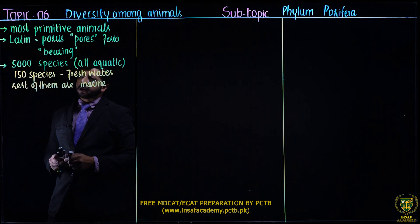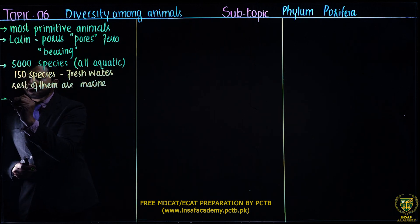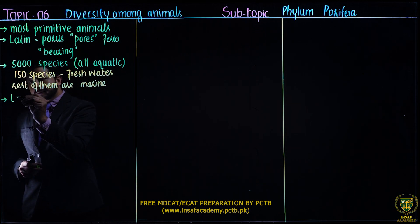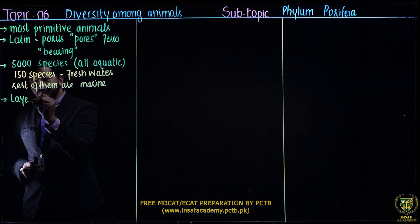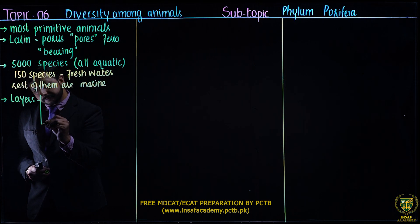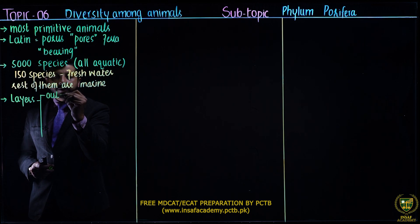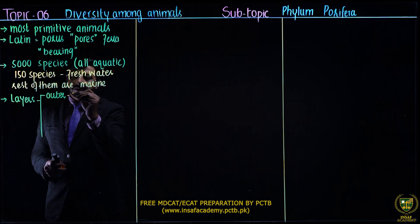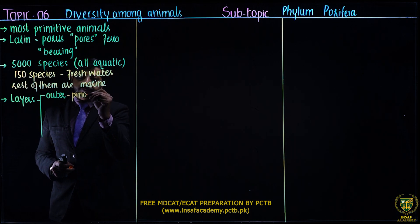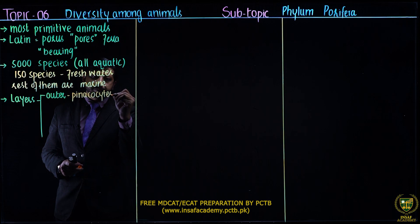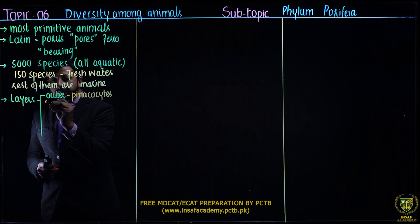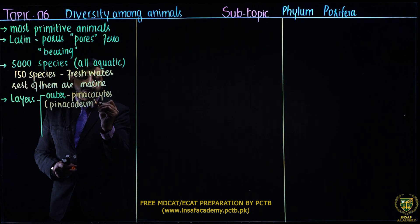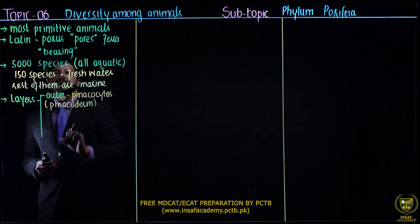Now let's go to their basic organization. They have two layers — their body is made up of two layers. The outer layer is made up of pinacocytes, and this forms the pinacoderm. 'Derm' means layer, so pinacoderm is the layer formed from pinacocytes.